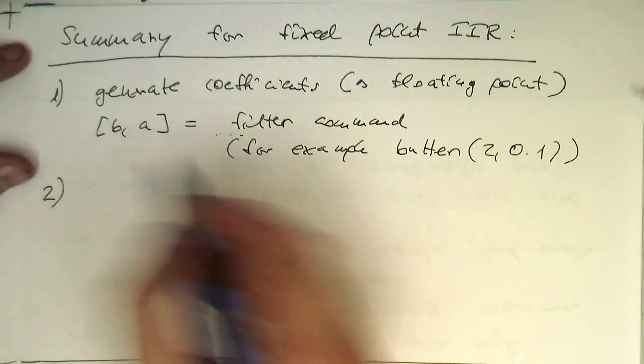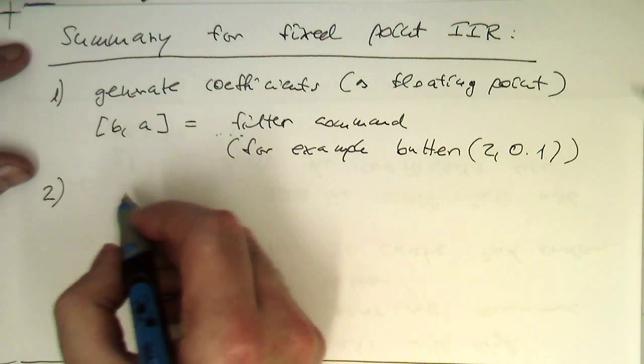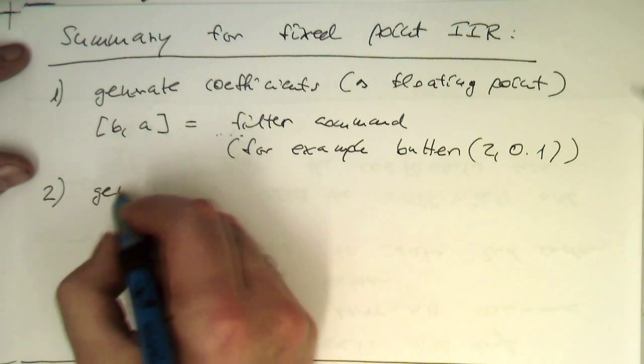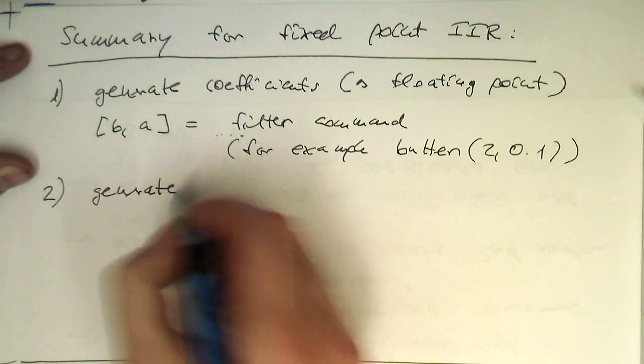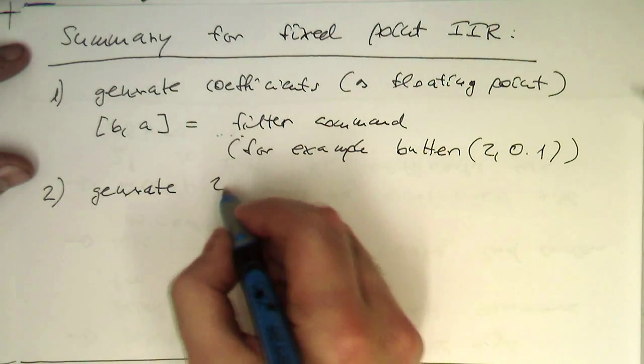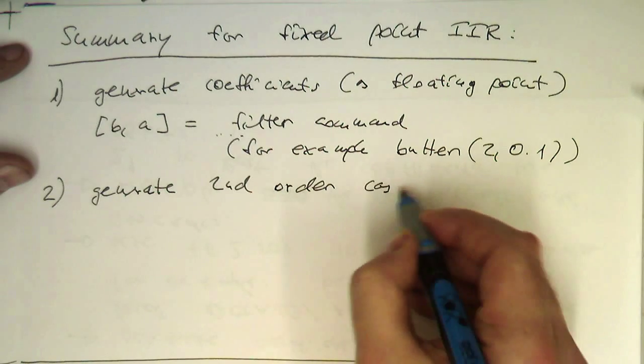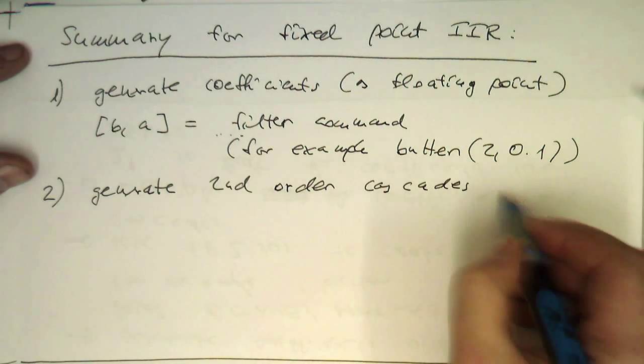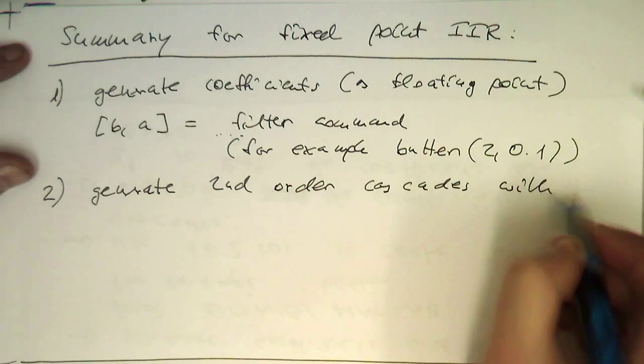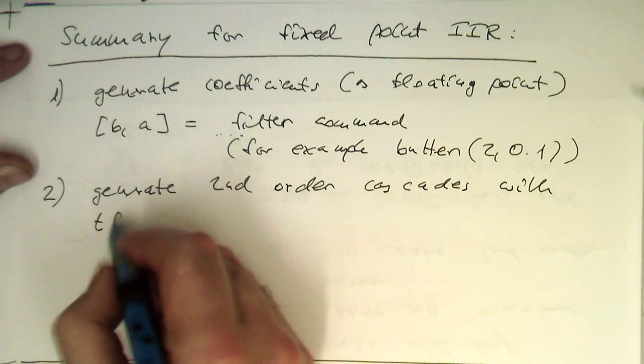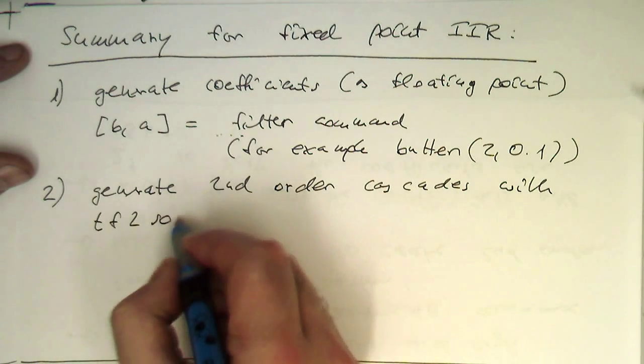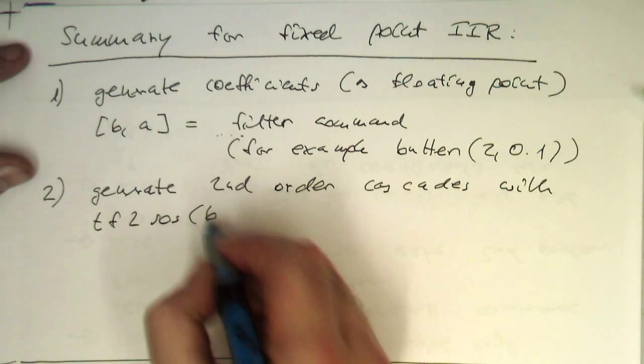And then the second step is generate second order cascades with tf2sos of B comma A.